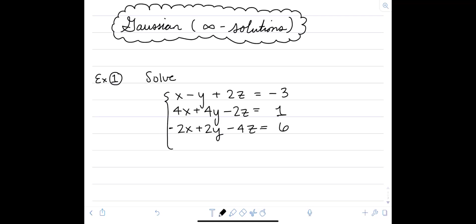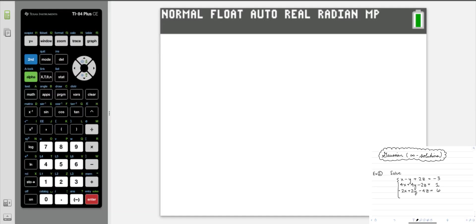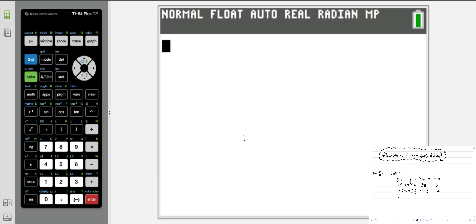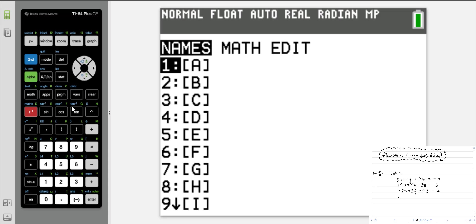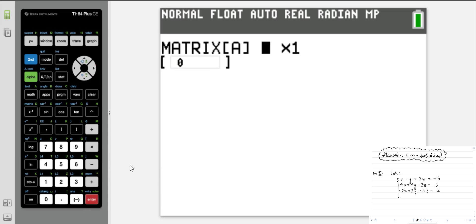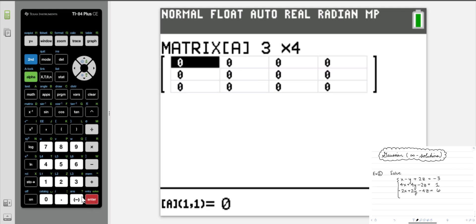Using our calculator to put this into reduced row echelon form. Let's enter our matrix into the calculator. We're going to go to the matrix menu, hit second, and hit above the x inverse key, and then we're going to tab over to the edit menu. I'm tabbing right. Hitting enter on matrix A, we're going to have to tell it the size of the matrix. We have three rows, we have four columns.